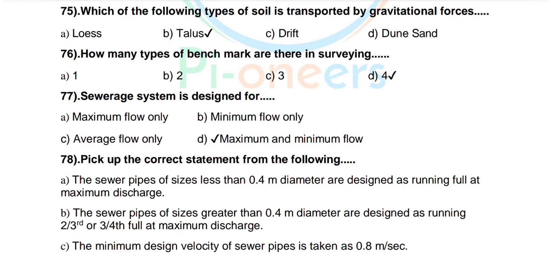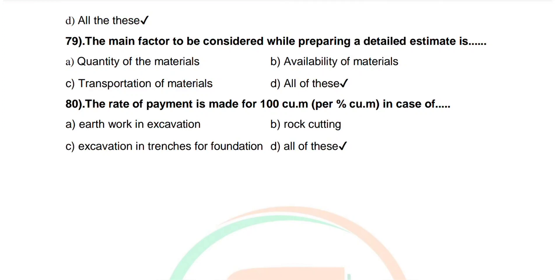Question number 78: Pick up the correct statement from the following. The sewer pipe of sizes less than 0.4 m diameter are designed as running full at maximum discharge. The sewer pipe of size greater than 0.4 m diameter are designed as running two-thirds or three-fourths full at maximum discharge. The minimum design velocity of sewer pipes is taken as 0.8 m/sec, or all of these. Correct answer: all of these.